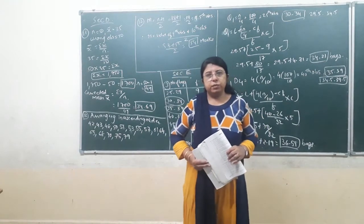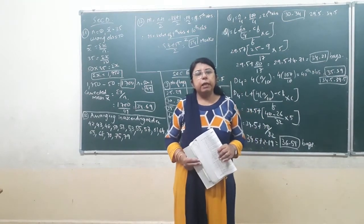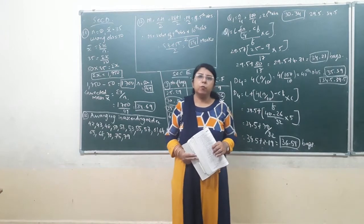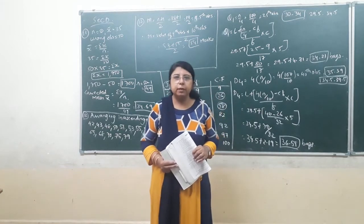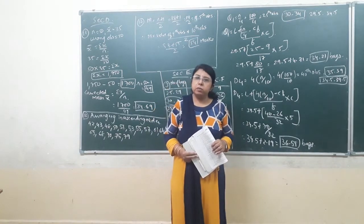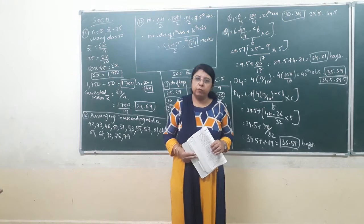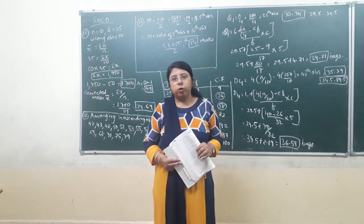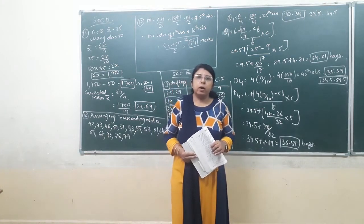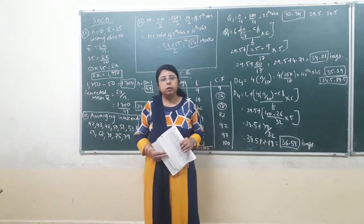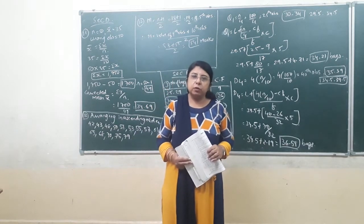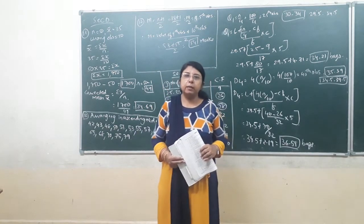Hello and welcome students. In the last video lecture, I had explained to you the third type of measure of central tendency, that is mode, and we had completed exercise 3.5 that was related to mode. Now in this video lecture, I am going to explain a few of the typical sums of exercise 3, that is section D and E.